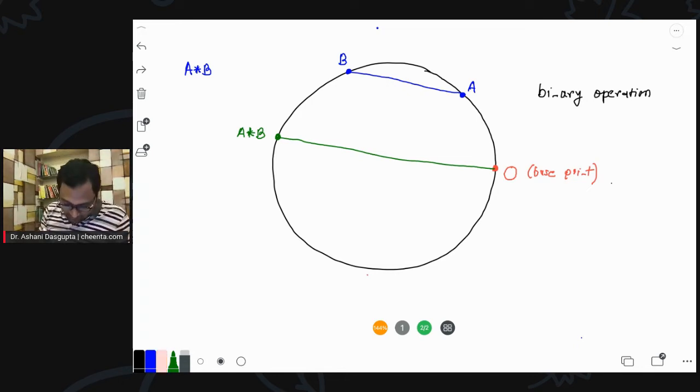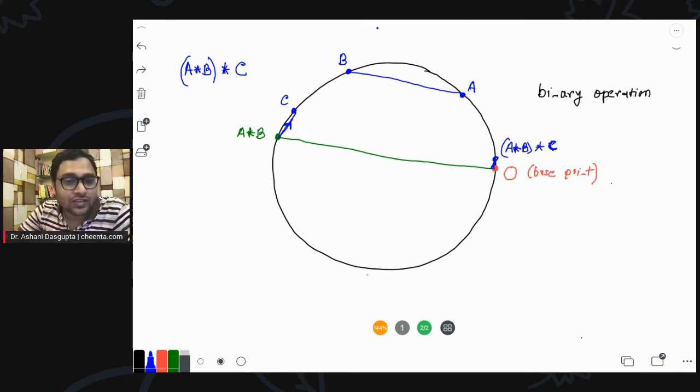Now, let's take another point, C. We would want to calculate A star B star C. Let's see how we can do that. Well, A star B, we know. We just join A star B with C. And then from O, draw a line parallel. It will be like a really small line. Draw a line parallel to this segment. And wherever it hits, this is A star B star C. This is a rule of combination of points on the circumference of the circle.